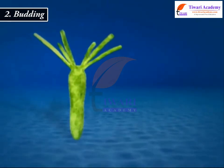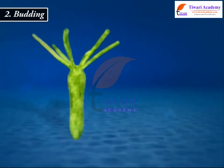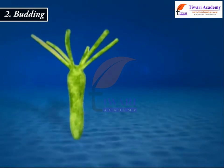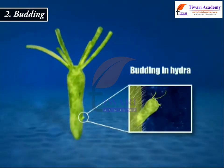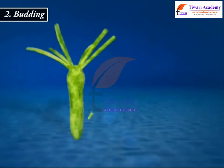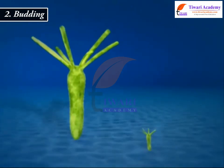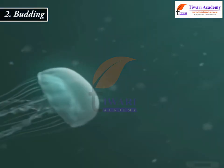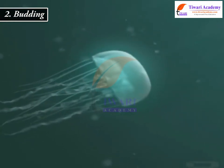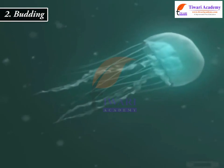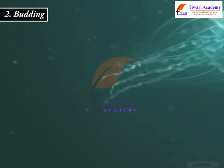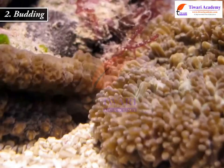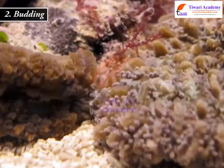In hydra, this process is similar to that of reproduction in yeasts. Initially, a small bud is formed on the side of the body, which enlarges and develops tentacles that help in feeding. The daughter bud then breaks off from the parent body. In organisms like echinoderms and jellyfish, the buds break off and form their independent bases.